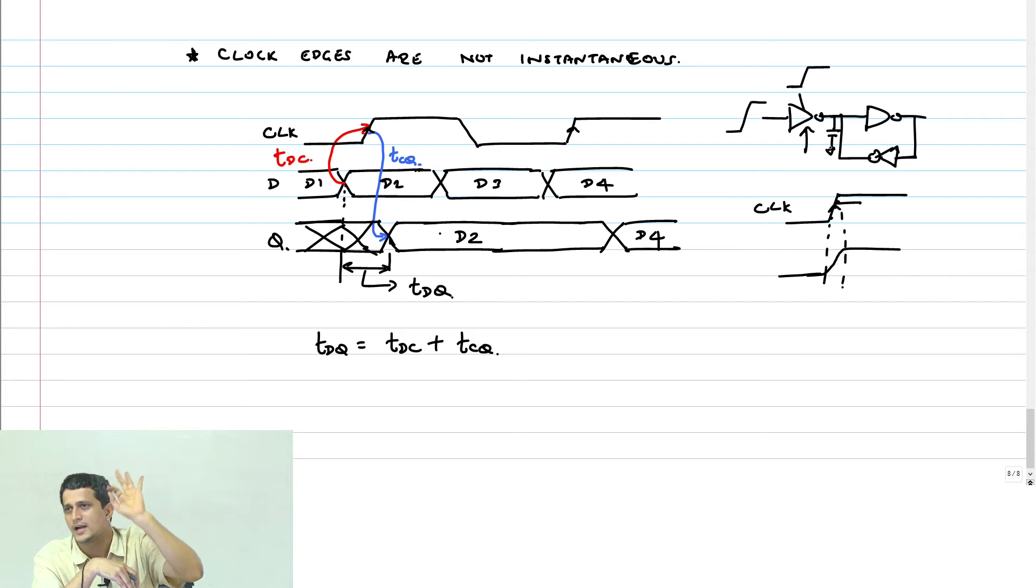It is very much possible that this capacitor here will charge not all the way to VDD or discharge all the way to ground. It may come and land up somewhere near VM. If this comes to VM, this will also be VM. And it can remain in that state for a long time, until noise or something comes and switches it one way or the other.